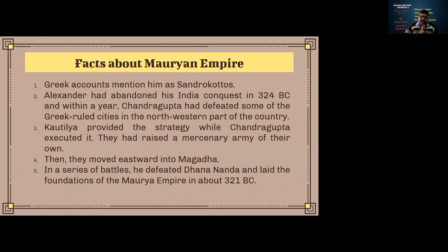The Maurya Empire had a significant relationship with the Greeks. India was experiencing civil wars and invasions from different foreign powers who came to loot the country but later integrated themselves by making marital alliances with the Mauryas. Alexander and his successors had certain relations with the Maurya dynasty. Chandragupta defeated some of the Greek-ruled cities in the northwestern part of the country. With Kautilya's strategy and Chandragupta's execution, they built a powerful army and moved eastward toward Magadha, fighting a series of battles that laid the foundation of the Maurya Empire.